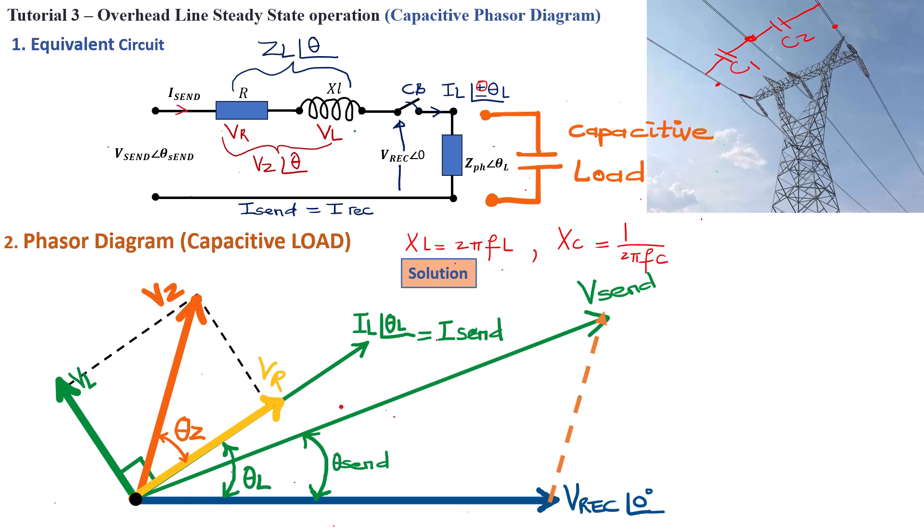And over here, basically the angle between the sending end voltage and the load current, that angle can also be calculated that's basically going to be θL minus the sending end angle, and you're going to get this angle. So this is it, guys,